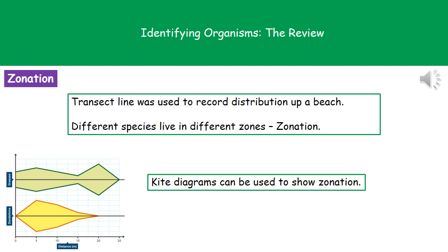The last thing we need to consider is the idea of zonation. We use a transect line to record the distribution of organisms across a habitat, like a beach or a field. What we identify is that different species will live in different zones — that is what zonation actually is: different species living in different areas of a given habitat.